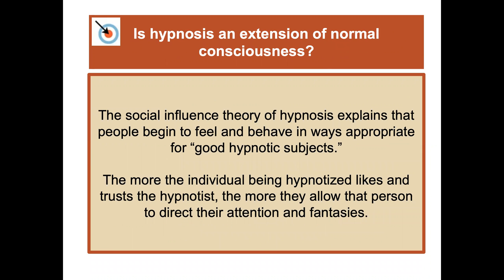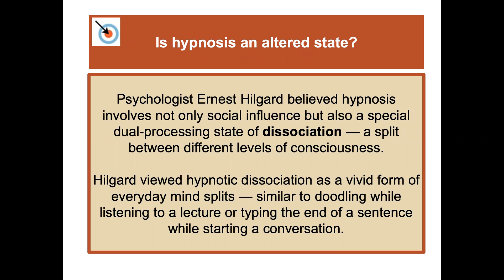Is hypnosis just an extension of normal consciousness? The social influence theory of hypnosis explains that people begin to feel and behave in ways appropriate for good hypnotic subjects — the more the individual likes and trusts the hypnotist, the more they allow that person to direct their attention and fantasies. Psychologist Hilgard believed hypnosis involves not only social influence but also a special dual processing state called dissociation — a split between different levels of consciousness — similar to everyday mind splits like doodling while listening to a lecture.